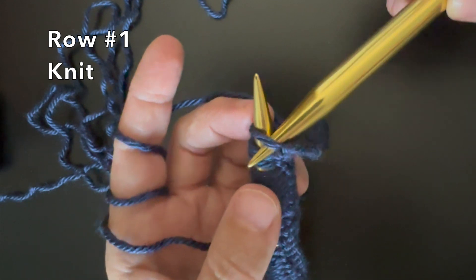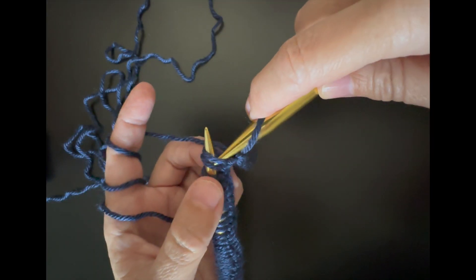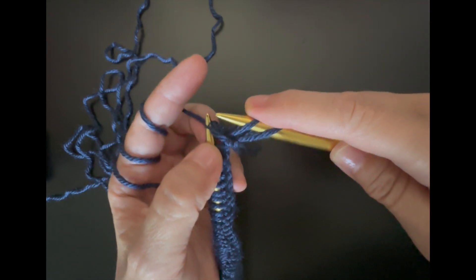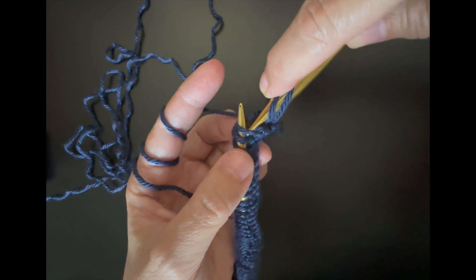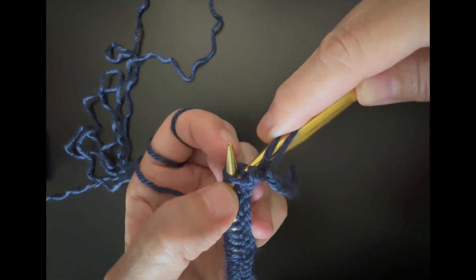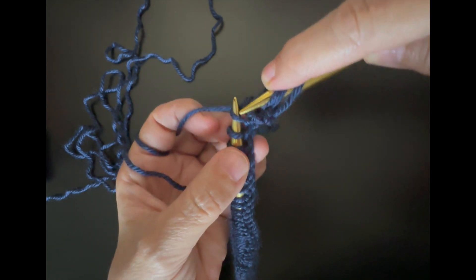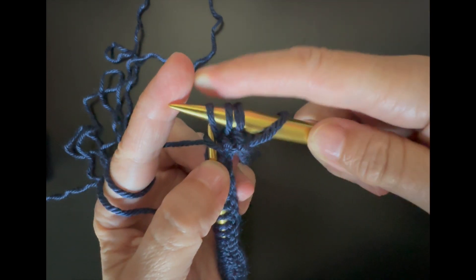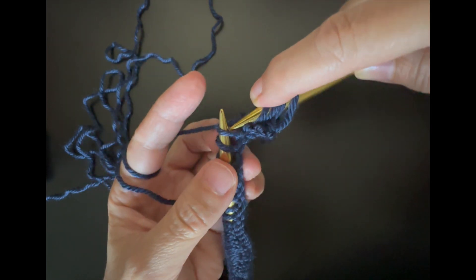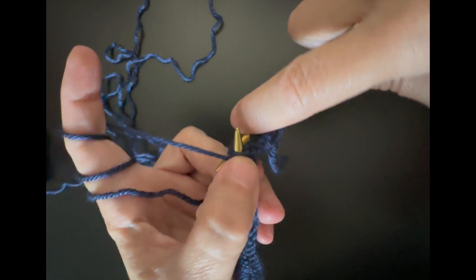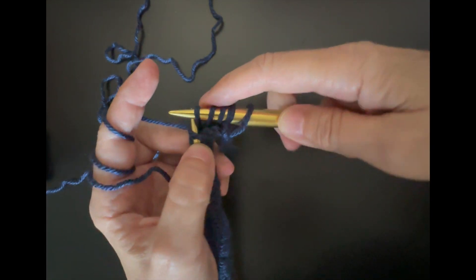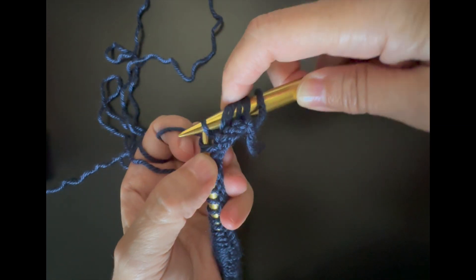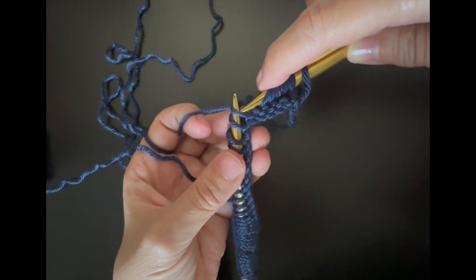Now we are going to start with row number one. The first stitch we just pass it, and then the next two points I take them, I knit them, and then the first loop I just let it go. Now the second loop and the third loop I just take them, knit them, and the first loop I just pass them. It's kind of difficult to tell by words, but just follow what you see.